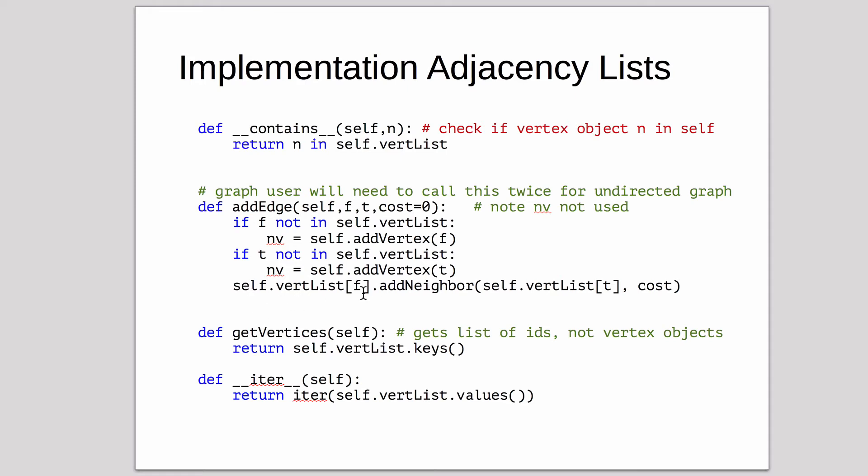Self.vertexList[f], that's looking up the vertex from the graph, and then it's calling the AddNeighbor to add that vertex to. So we're getting that and then the cost. So that adds an edge and it creates the vertex if needed.